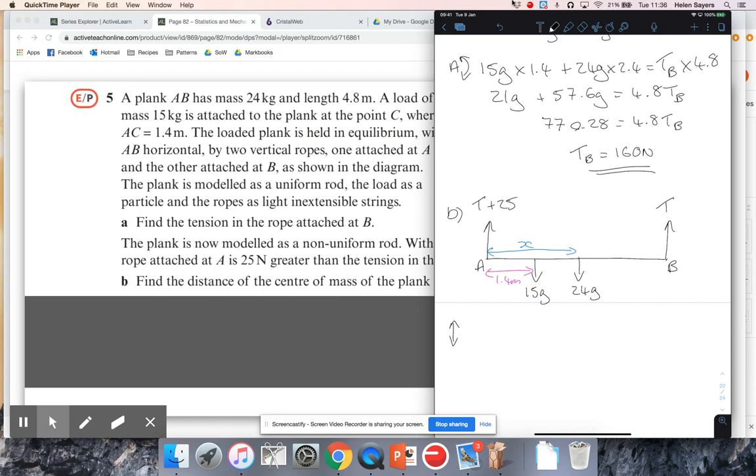And if I do that, the downward forces on that plank are the 15G and the 24G, and they must equal the upward forces of T plus 25 and then plus the other T. Okay, so what's that going to be? So 39G is 2T plus 25. So if I do 39 times 9.8 minus 25, I get 2T is 357.2. So I get T is 178.6, so 179 newtons.